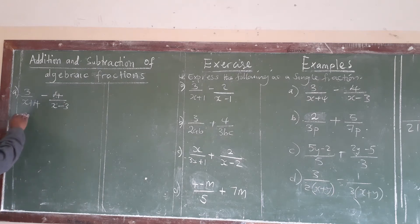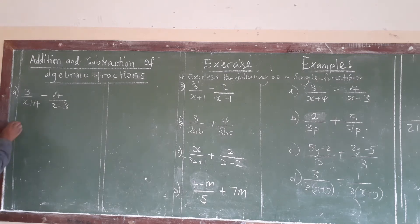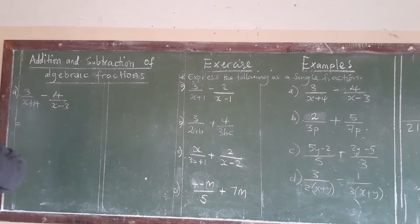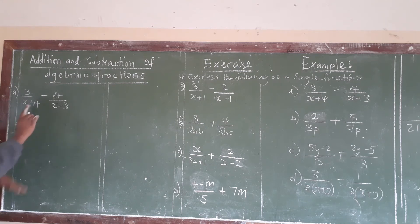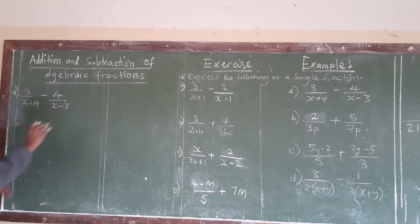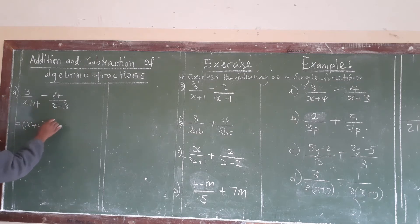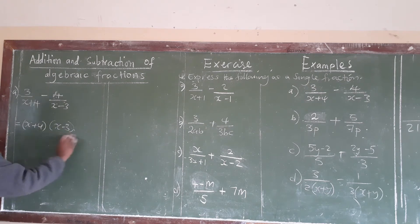Looking at the nature of the denominators we have here, if we were to find a specific lowest common denominator, we might have a challenge. Therefore, what we do is we take these two denominators and put them in brackets. So we have x plus 4 in brackets, as well as x minus 3 in brackets. By so doing, we are trying to get the product of these two as our lowest common denominator.